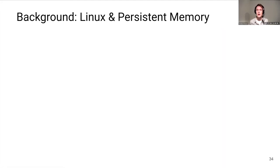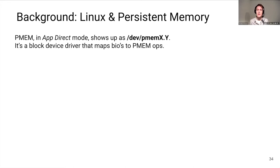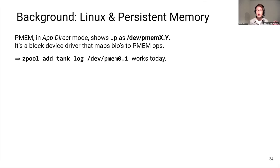How do we reach that hardware in an operating system like Linux? There are several operating modes for PMEM; we use app direct mode. In that mode, the PMEM shows up as a block device node, and the kernel driver implements block device IO using PMEM native store and cache flush operations. This enables existing block device consumers to take advantage of PMEM performance without modification — for example, in the earlier experiments on ZIL performance, I just used /dev/pmem as a slog device with current upstream OpenZFS.